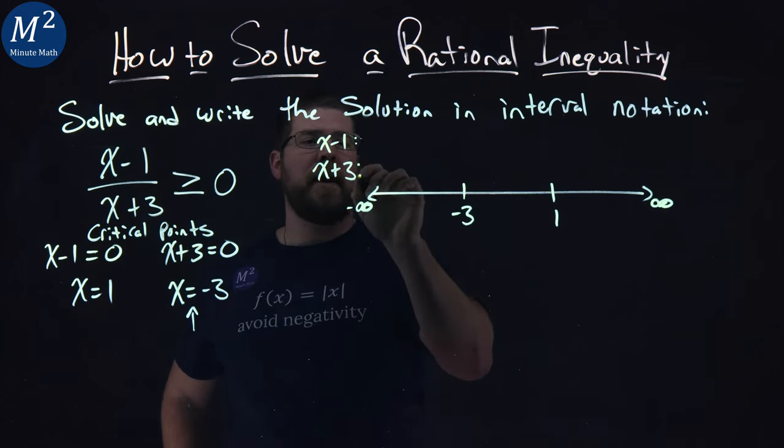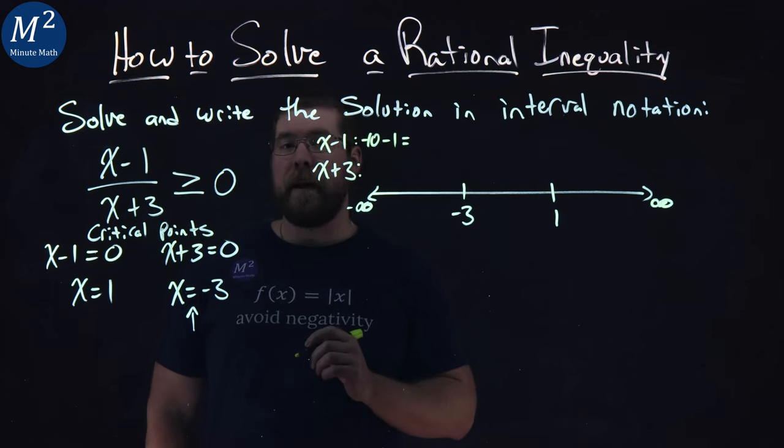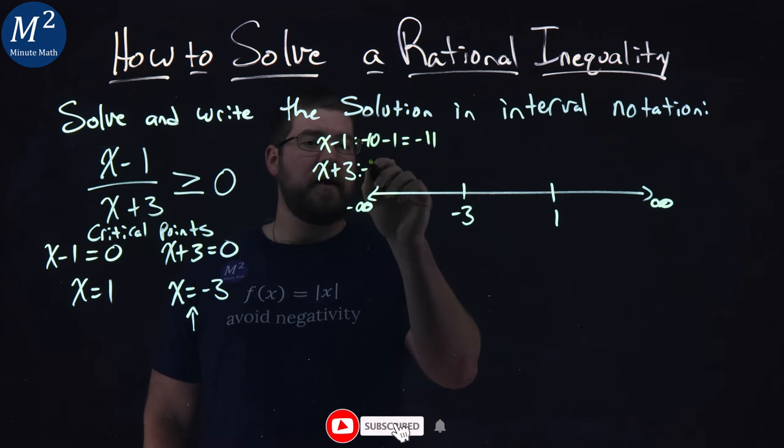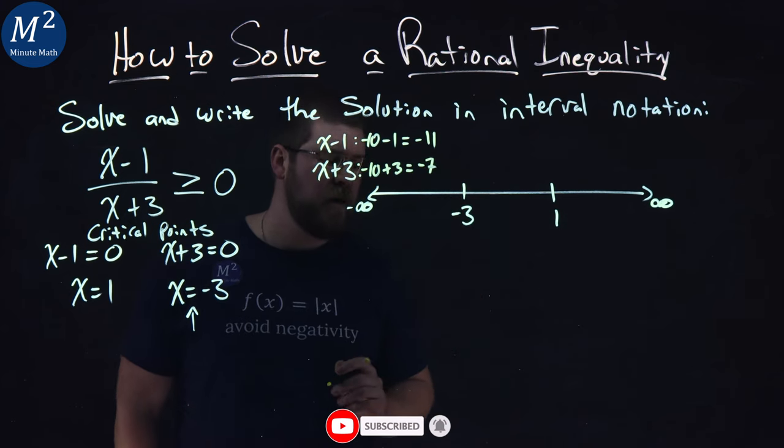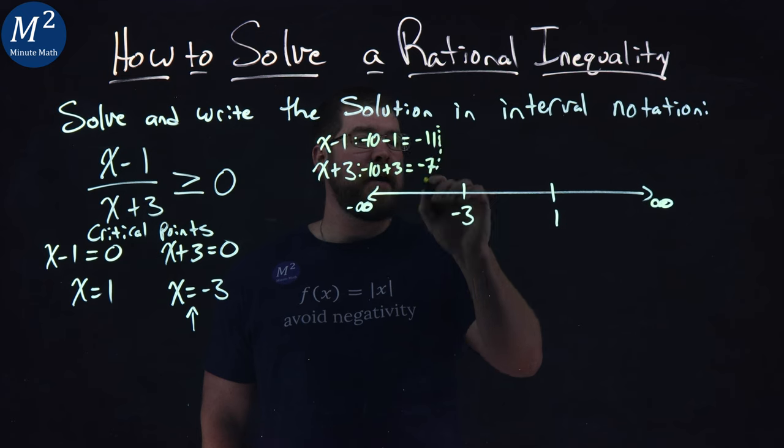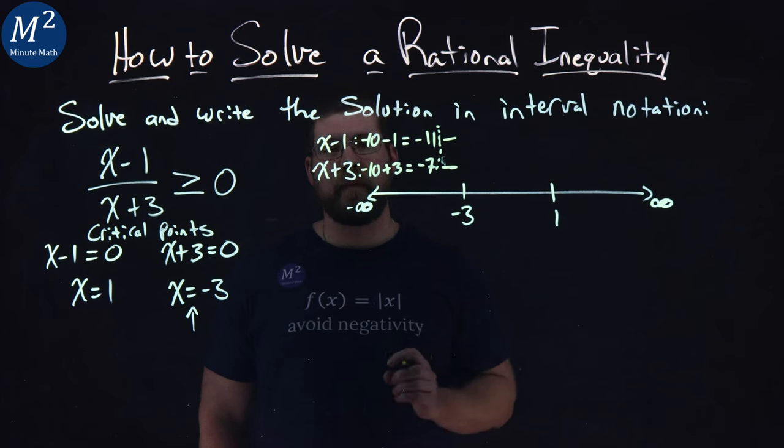So what happens if we put negative 10 in? Negative 10 in for x, minus 1, what do we get? That's negative 11. The second number, same thing, negative 10 plus 3. What do we get? Well, negative 7. I don't really care what these numbers are, but what I do care about is if it's a negative number. We have a negative and a negative.